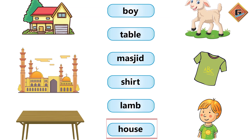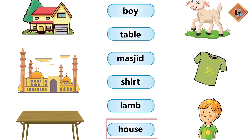Lamb is matched. Shirt is Shirt. Boy is Boy. House, Mustard, and this is Table.